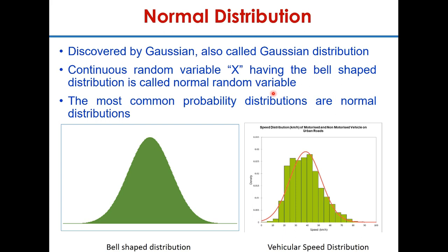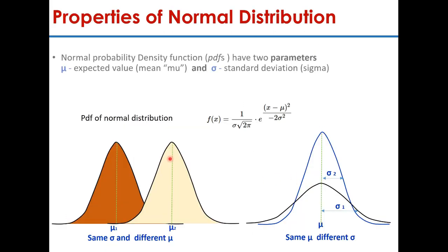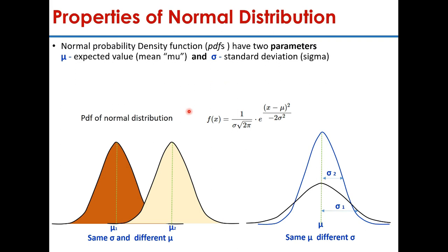Normal distribution generally has a bell-shaped curve. This is the histogram of continuous data which follows a normal distribution — for example, vehicle speed distribution. The important properties of a normal distribution are that it has mu, the mean value, and sigma, the standard deviation — two parameters.